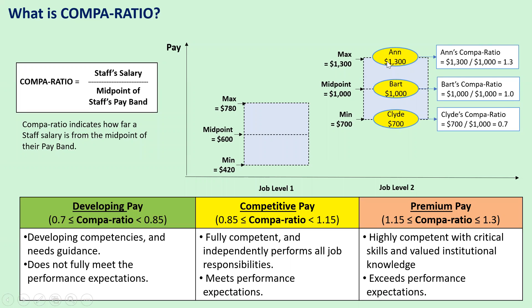If your salary is $1,300 and the midpoint of your pay band at job level two is $1,000, then your compa-ratio is 1.3, because $1,300 divided by $1,000 is 1.3.